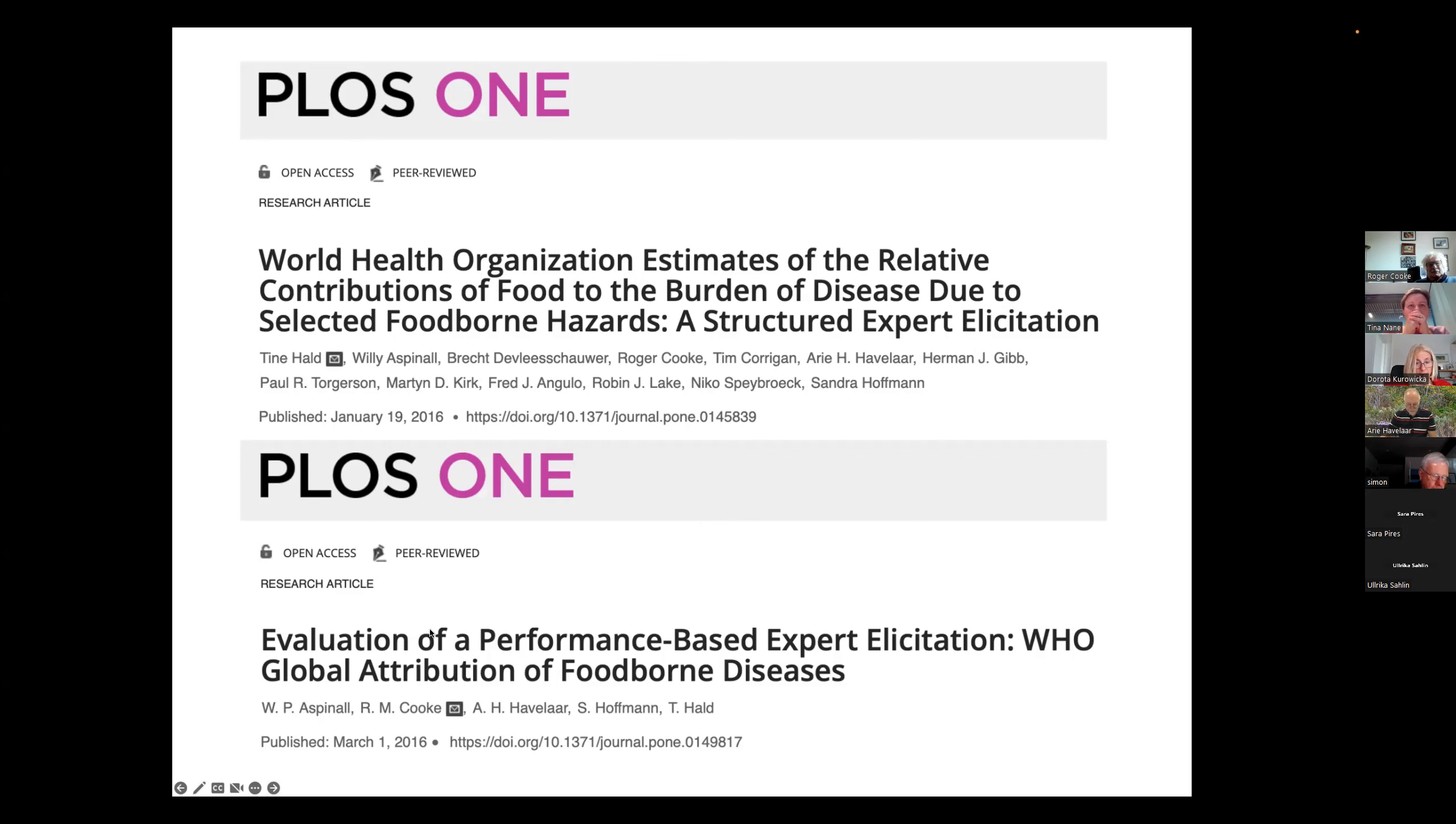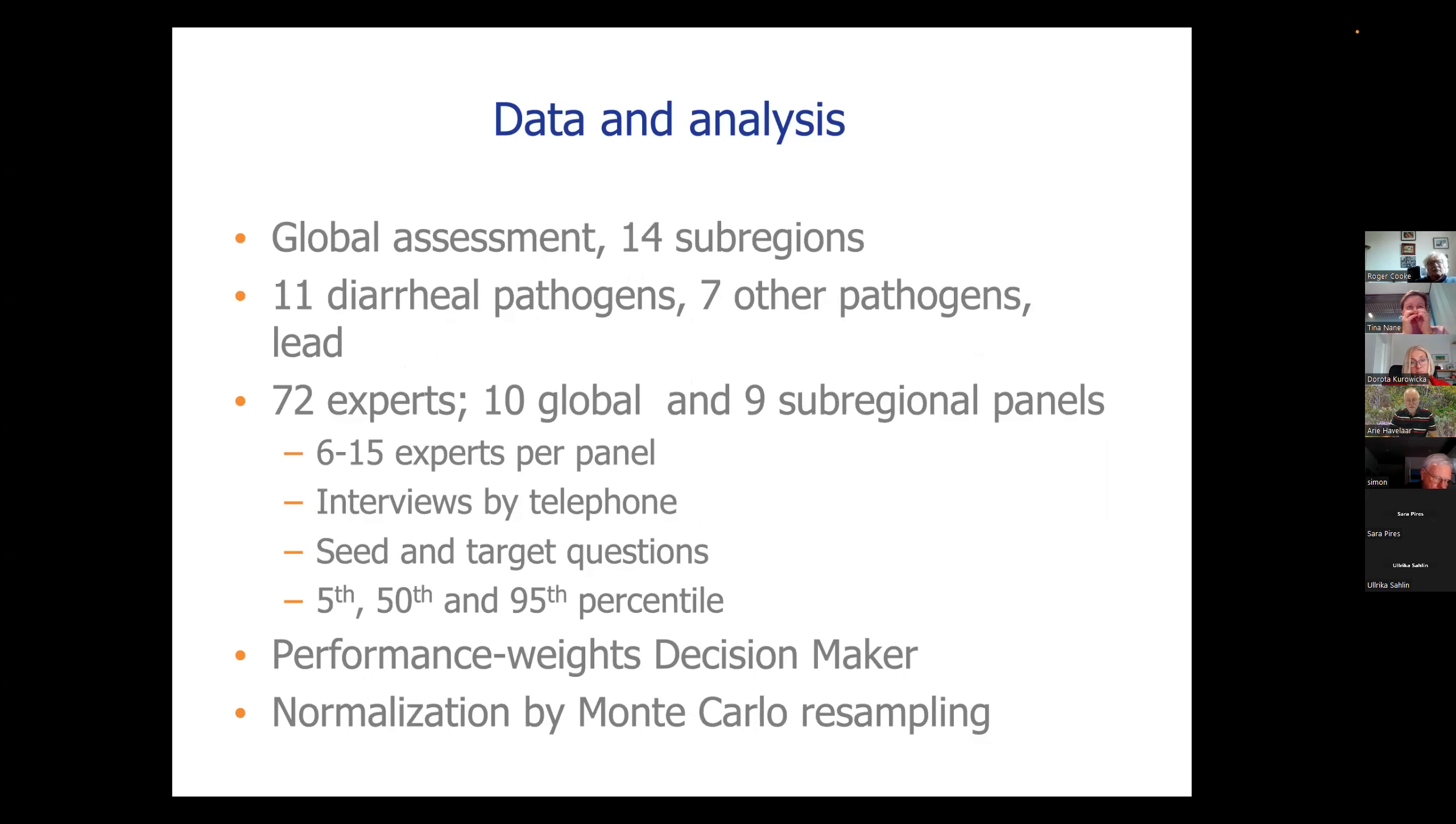And two papers were published out of it. One presenting the estimates, and then a more detailed analysis of the performance of the experts, led by Billy. So this was a global assessment where the world was divided in 14 sub regions. And we did assessments for 11 diarrhea pathogens, seven other pathogens, invasive pathogens or parasites. And also for LADS. We had 72 experts in the whole study, and based on their expertise and where they were and which parts of the world they knew about. We assigned them to 10 global panels. So these panels would do attribution for one or more specific hazards for all regions in the world. And also for some pathogens, we divided them over sub-regional panels. So they will do only attribution for the Americas or for Africa or for Asia, for example. So this resulted in six to 15 experts per panel.